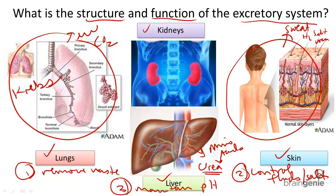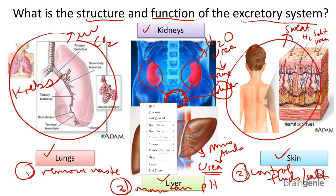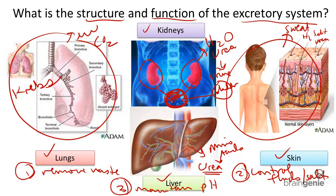And finally, our kidneys. Our kidneys remove excess water and urea from the blood, creating something called urine. Urine exits the body starting with the kidneys and then travels down to the bladder. The bladder is a stretchy, muscular, hollow organ that holds urine until it's ready to be released. It is released through a tube called the urethra.